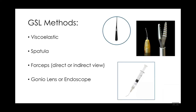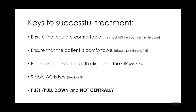There are various methods that can be used for GSL. Viscoelastic on a cannula can be used to separate the PAS with a mechanical force. A spatula like a Koch spatula, and forceps under both direct and indirect view are options. A gonio lens is key, but you can also use endoscopy. I'll go over a couple of cases to illustrate the different techniques.